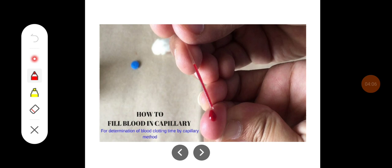So in the capillary method, a moderate drop is sucked into the capillary tube like this, up to two-thirds of the capillary tube. Then after 2 minutes, it is broken at 1 to 2, 1 centimeter length at each 30 second interval